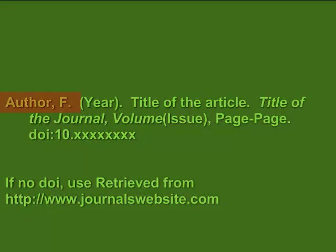Here is an example that shows what goes into an APA citation for an article. It includes the author's last name and first initial, the year of publication, the title of the article with only the first word and any proper nouns capitalized, the title of the journal in which all words are capitalized as usual, the volume number — both of which are in italics — the issue number in parentheses with no space between the volume and issue numbers, and the inclusive page numbers.